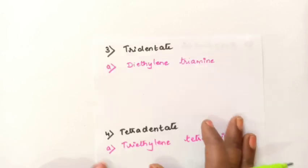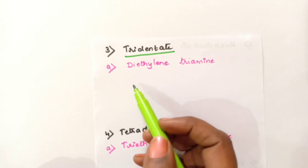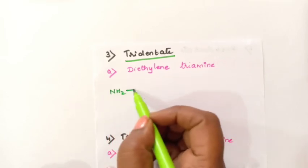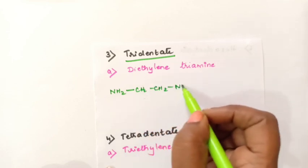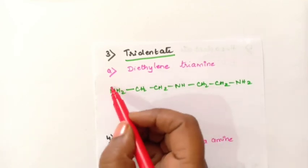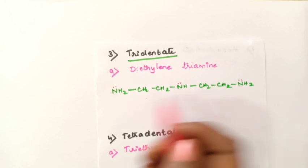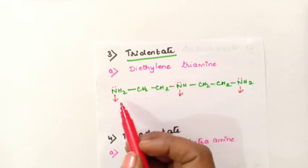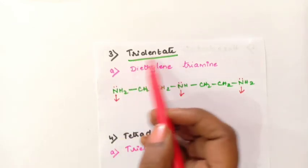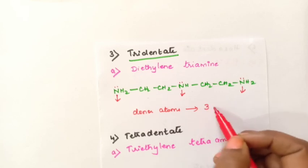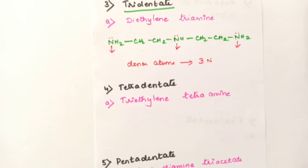Now examples for tridentate ligand. The first example is diethylene triamine. The structure is NH2-CH2-CH2-NH-CH2-CH2-NH2. Each nitrogen has a lone pair of electrons. The first nitrogen forms one coordination bond, the second nitrogen forms one, and the third nitrogen forms one — three coordinate bonds total. Therefore it is called a tridentate ligand. Donor atoms are three nitrogen atoms.